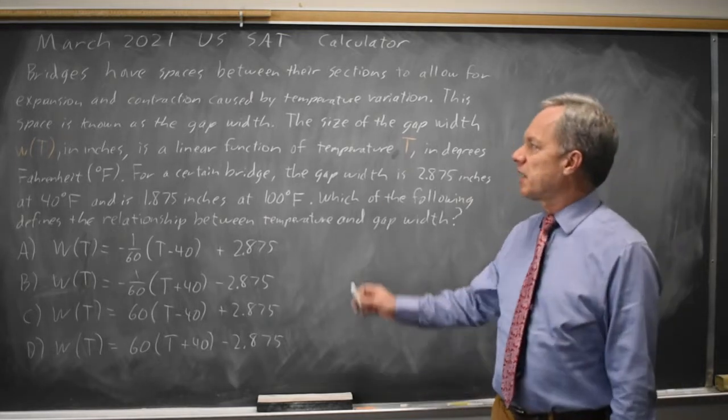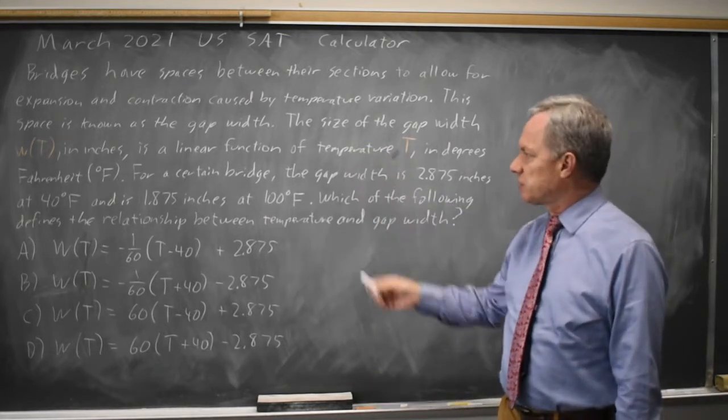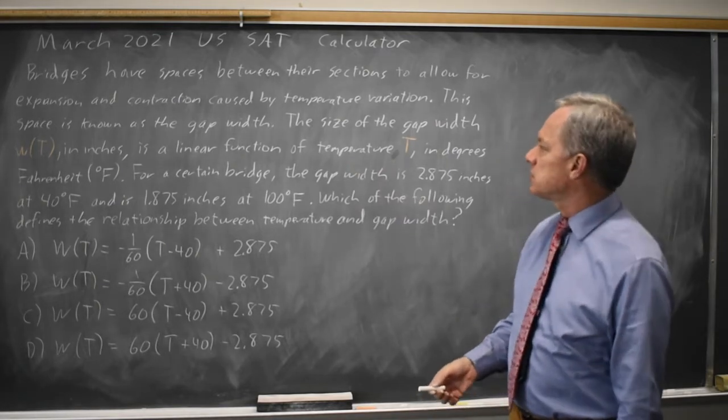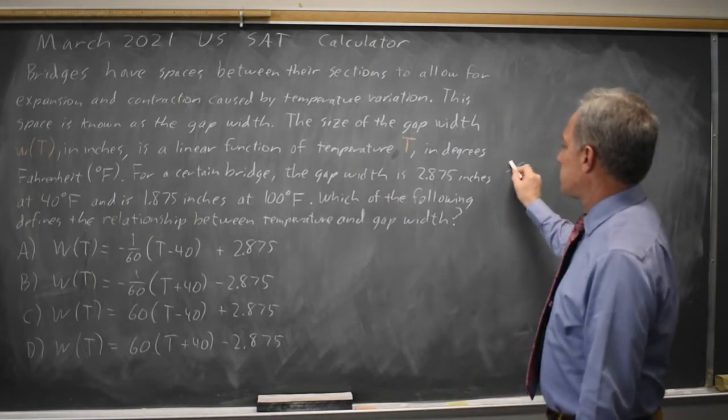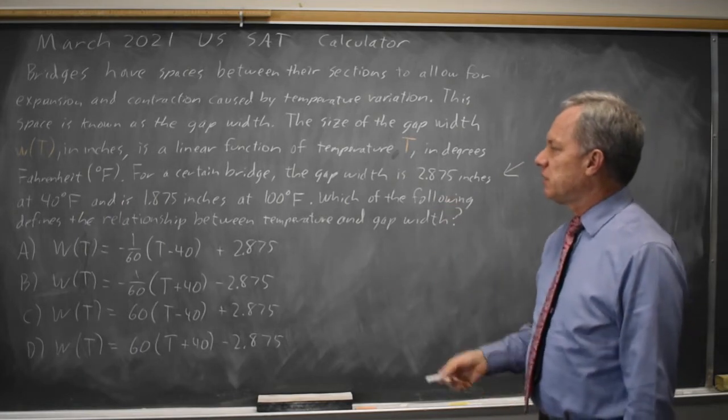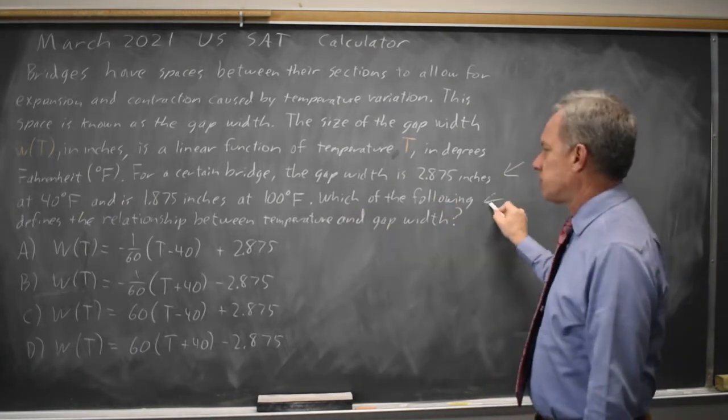College Board is describing the gap width for bridges and they tell you what that is and give you two points. Gap width is 2.875 inches at 40 degrees Fahrenheit and 1.875 inches at 100 degrees Fahrenheit.